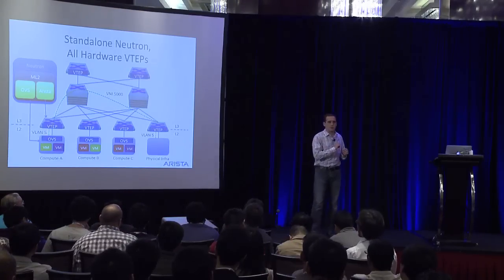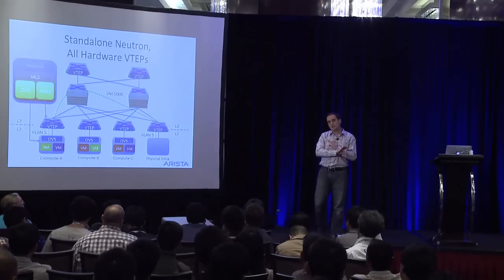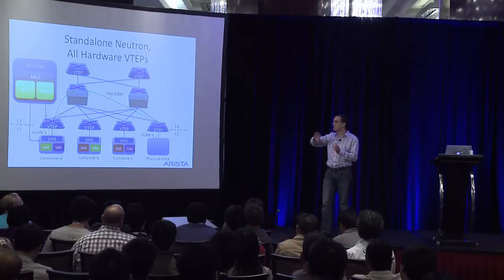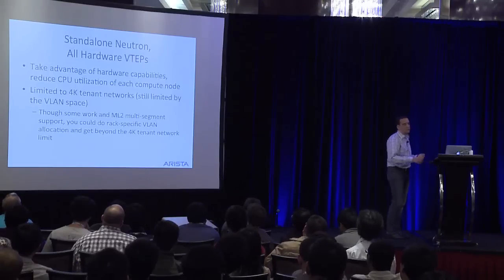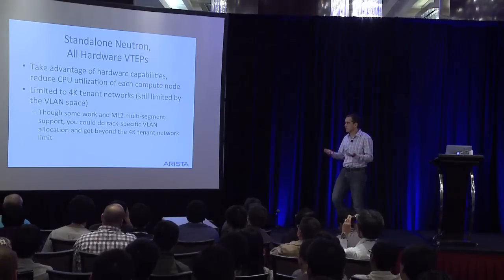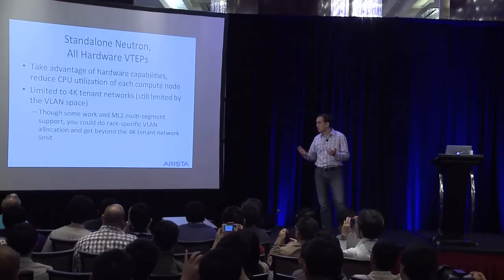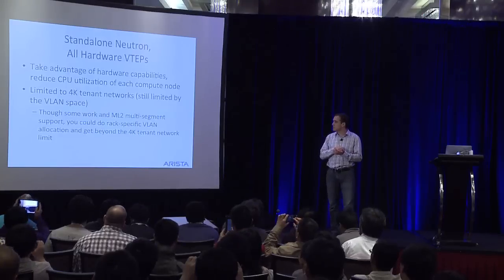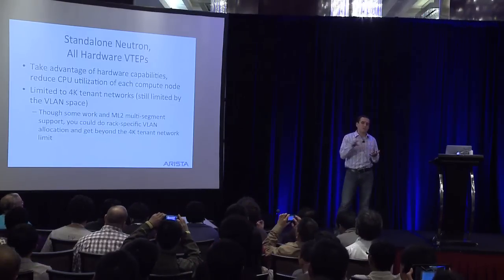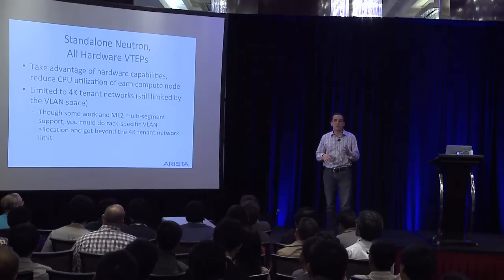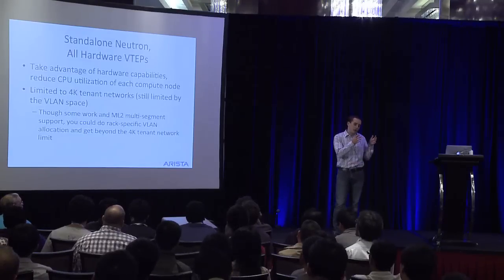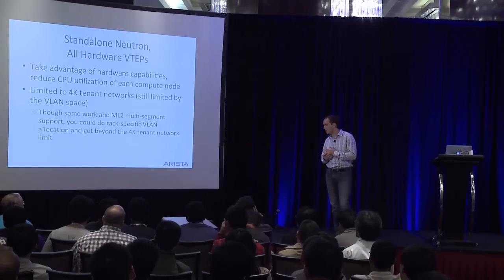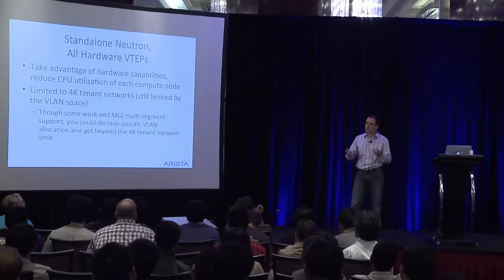On the question of what happens when you get over 4,000 VLANs: what I described is the simple version — I only need 4,000 tenant networks but want to use a layer three fabric. In that world, VLANs are allocated consistently across all your racks. For service providers who want to go over 4,000 tenant networks, this isn't something we support today, but ML2 enables it with multi-segment support and rack-specific VLAN allocations — your VLAN is only locally significant within that rack. You can have 4,000 tenant networks within a rack, and a VM on one rack may have a different VLAN tag than the same tenant network on another rack. This is something ML2 enables in a more general way.